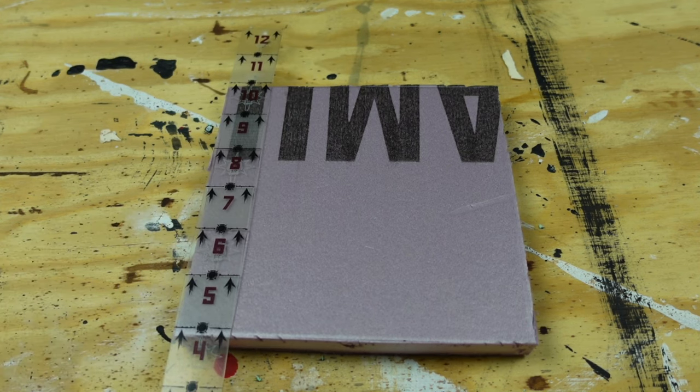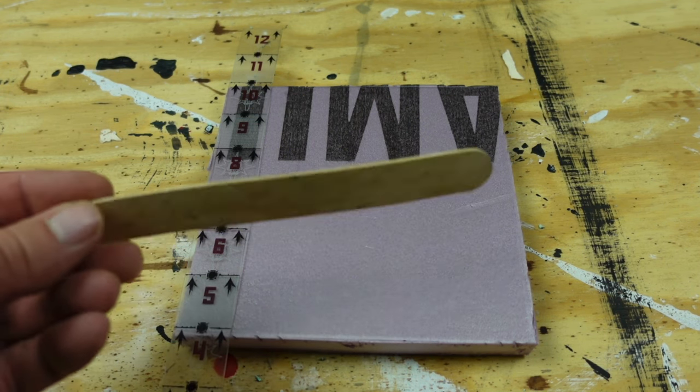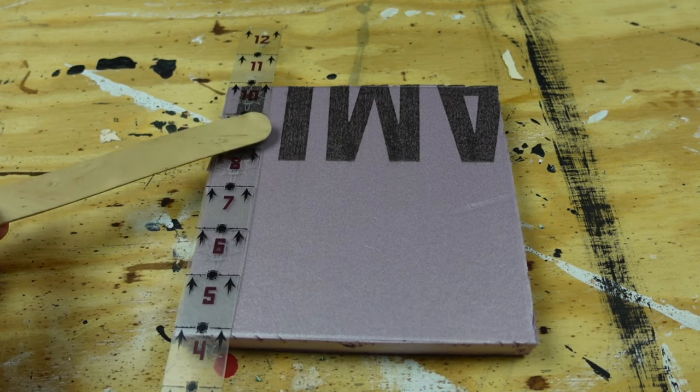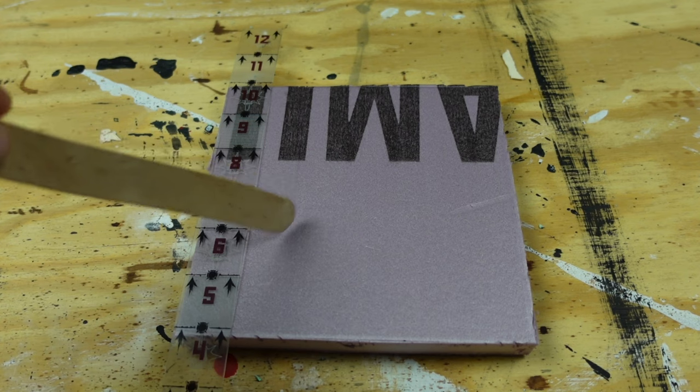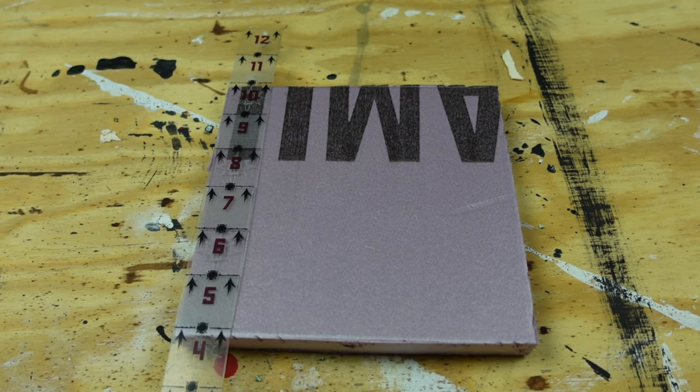So we're going to use one of my favorite tools for working with foam, this popsicle stick, because it'll give me a good indentation and it'll collapse some of that under layer of foam, but it won't break through that top layer.